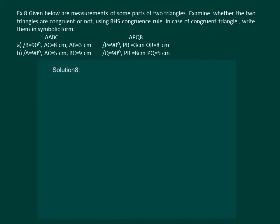Given below are the measurements of some parts of two triangles. Examine whether the two triangles are congruent or not using RHS congruency rule. In case of congruent triangles, write the result in symbolic form.